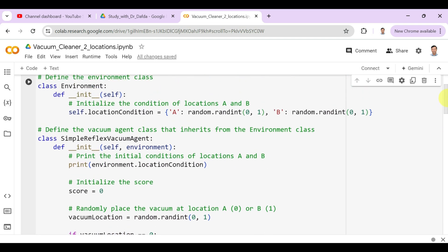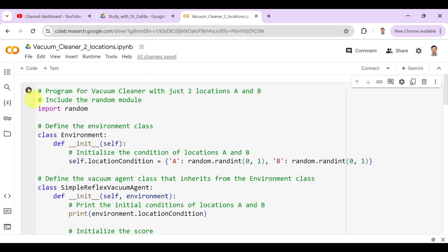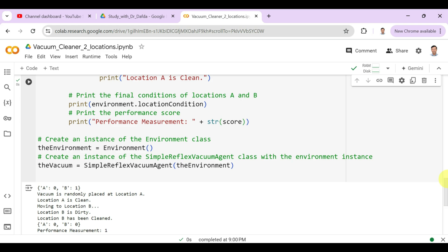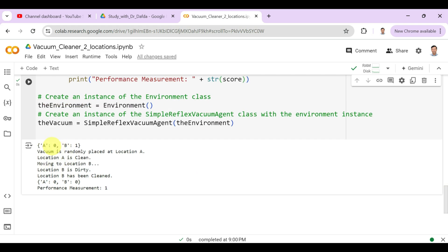So let us run the program and see the output. So we can see in the output that location A is 0, that is clean, and location B is dirty, and vacuum is randomly placed at location A. Location A is clean, moving to location B. Location B is dirty, so location B has been cleaned. So now A is also clean and B is also clean, and the performance measure is 1 because it has cleaned one location.